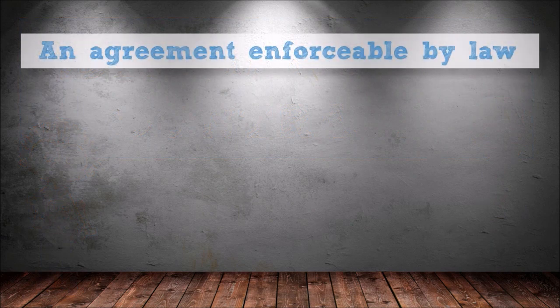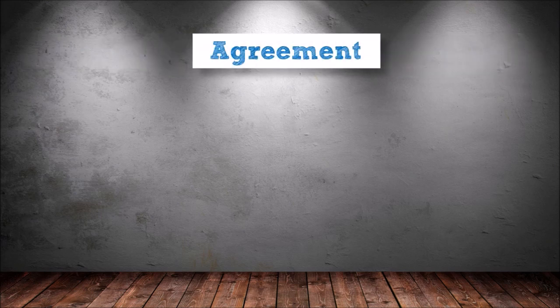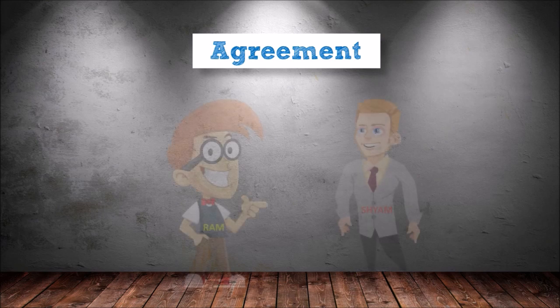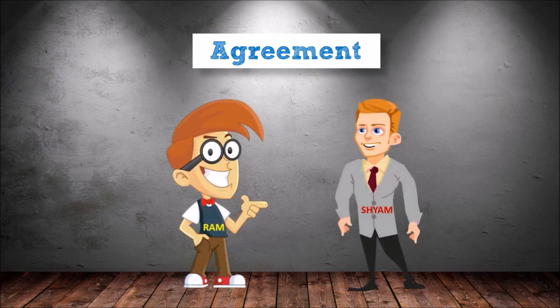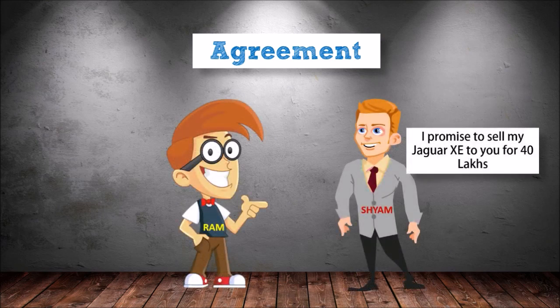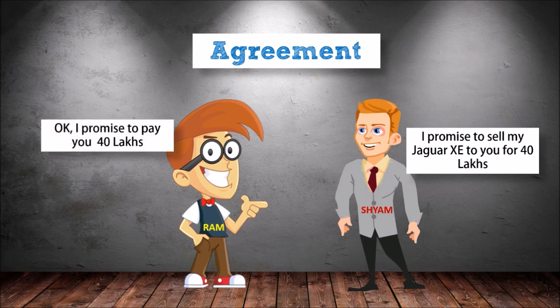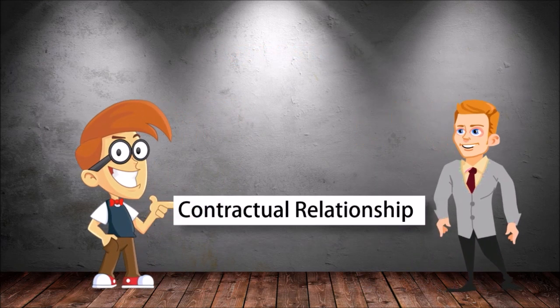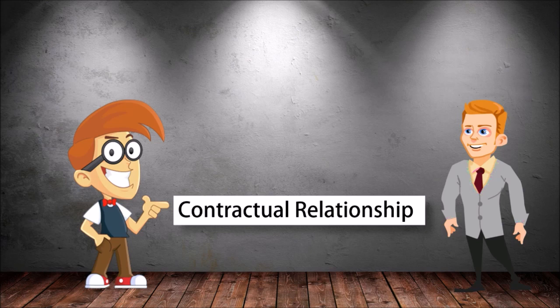As you all know, an agreement which is enforceable by law is a contract, whereas an agreement is a promise or every set of promises that make consideration for each other. For example, Sham said to Ram: I promise to sell my Jaguar XT to you for 40 lakhs, and Ram replied: I promise to pay you 40 lakhs. Hence a contractual relationship has been created between these two parties.